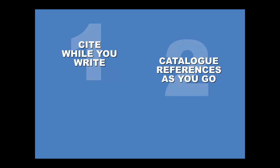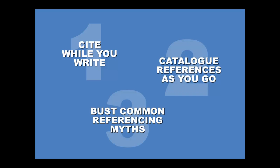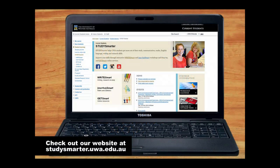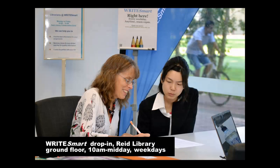That concludes our video on referencing in human biology at UWA. You can make referencing easy for yourself if you do these three things: cite while you write, catalogue references as you go, and bust common referencing myths. If you'd like more help with referencing and writing, check out the UWA Information Services website and the Study Smarter website — both have lots of resources to help. You can also come along to our Write Smart Drop-in sessions, which run between 10 and 12 on weekdays during the main weeks of semester, in the basement of the Reid Library on UWA's main campus in Crawley.